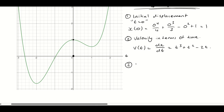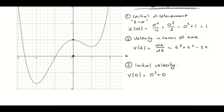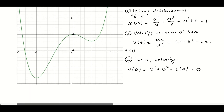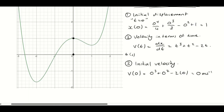To find the initial velocity, we evaluate when t equals 0. So v(0) equals 0 cubed plus 0 squared minus 2 times 0, which is just 0. So initially, the particle isn't moving — it has a velocity of 0 metres per second. That makes sense because looking at the graph, the derivative of the displacement at that point is a critical point where the gradient equals 0.